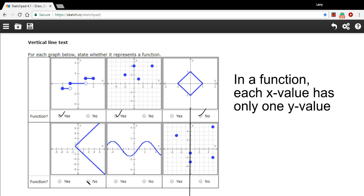this one not, this one was, and this one not. So that is how to use the vertical line test to determine if something is a function.